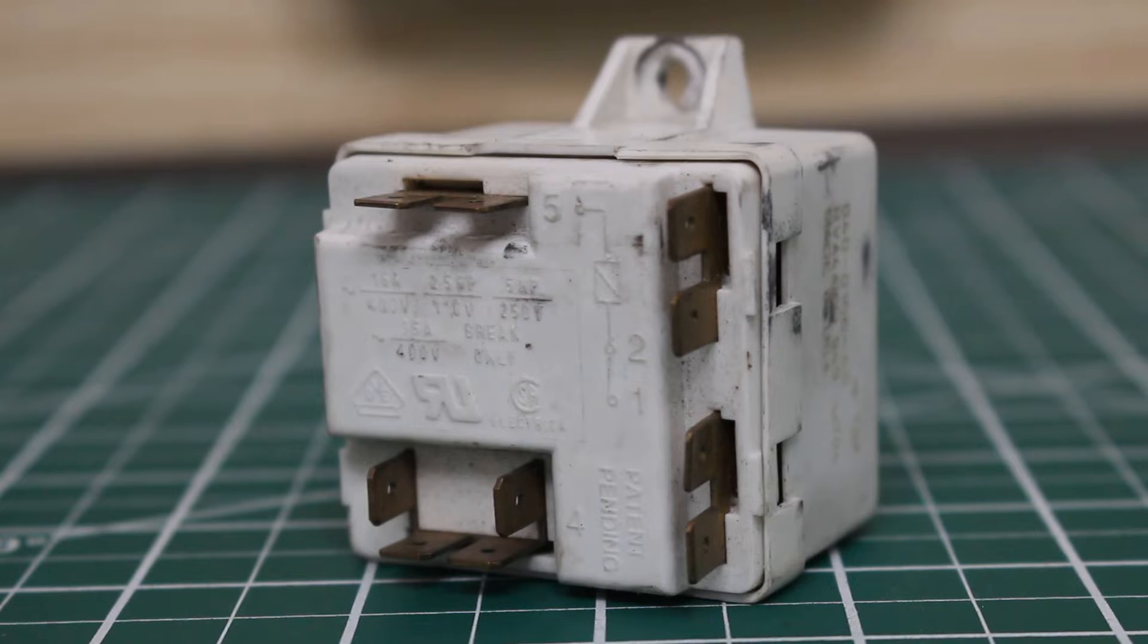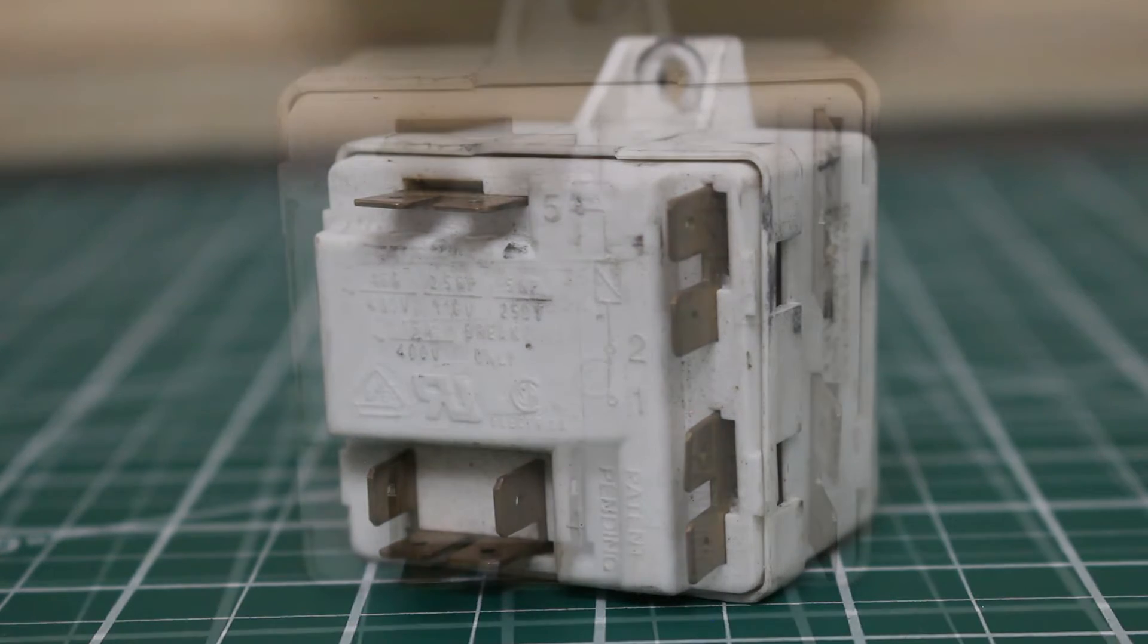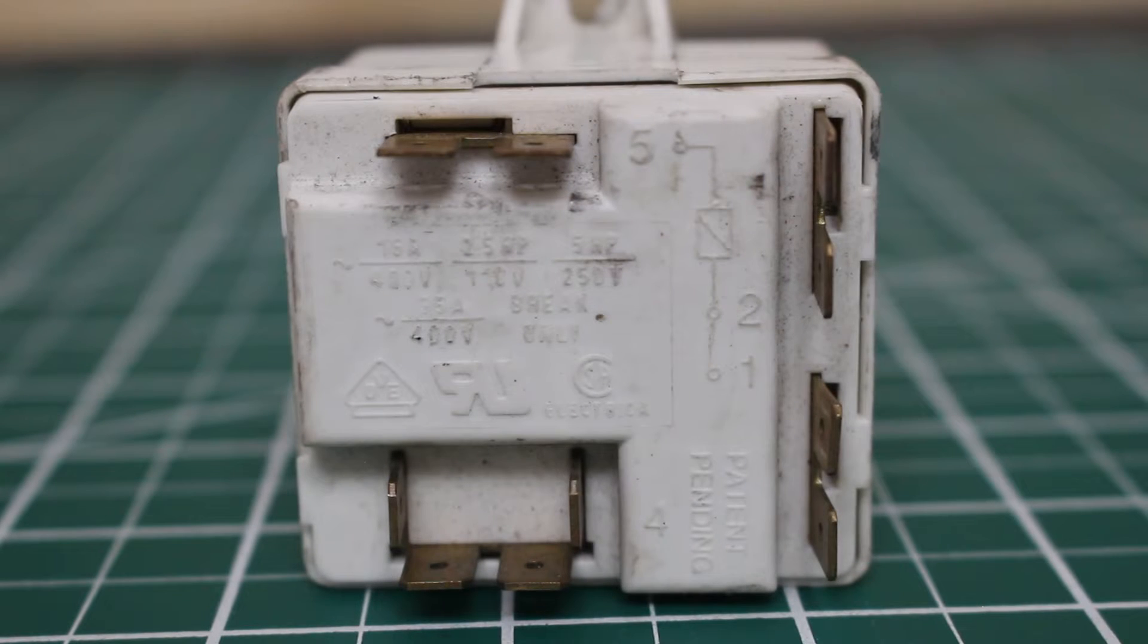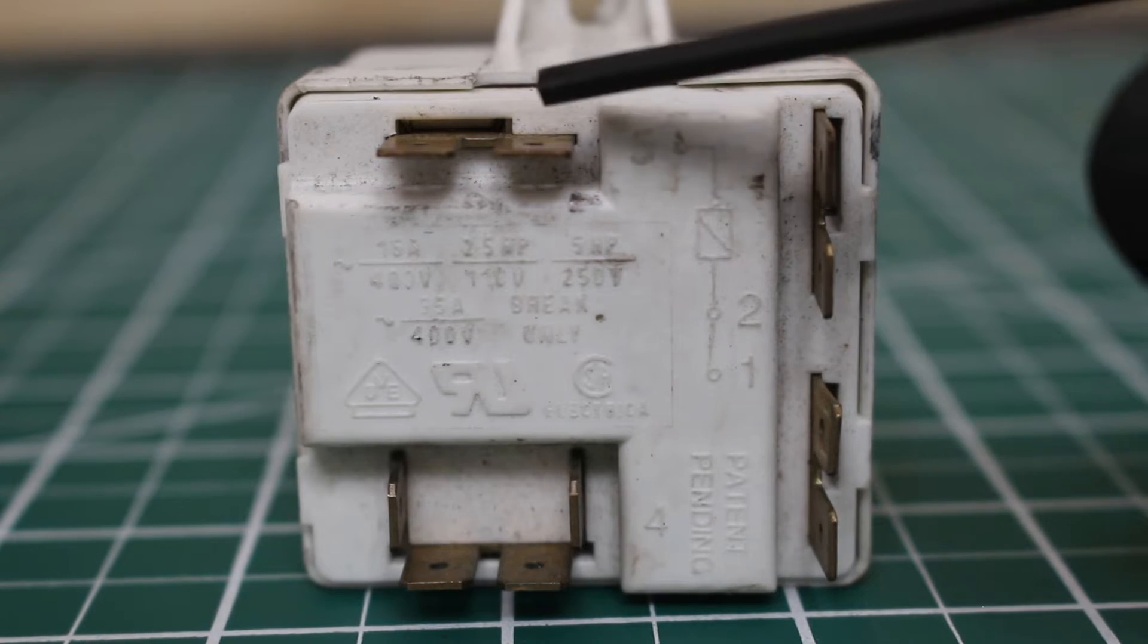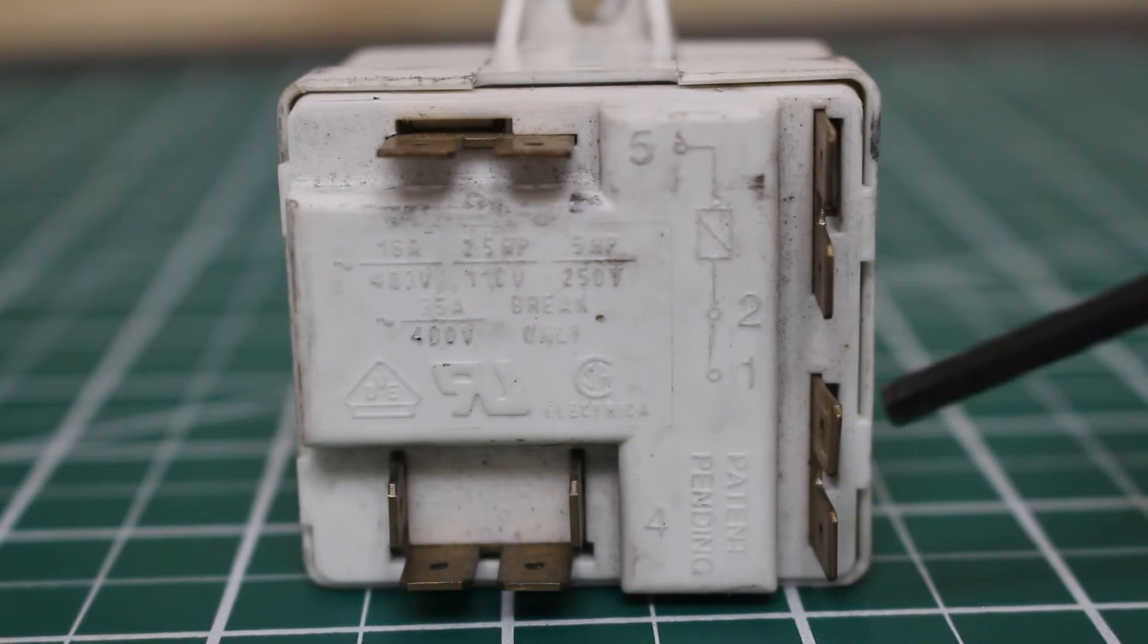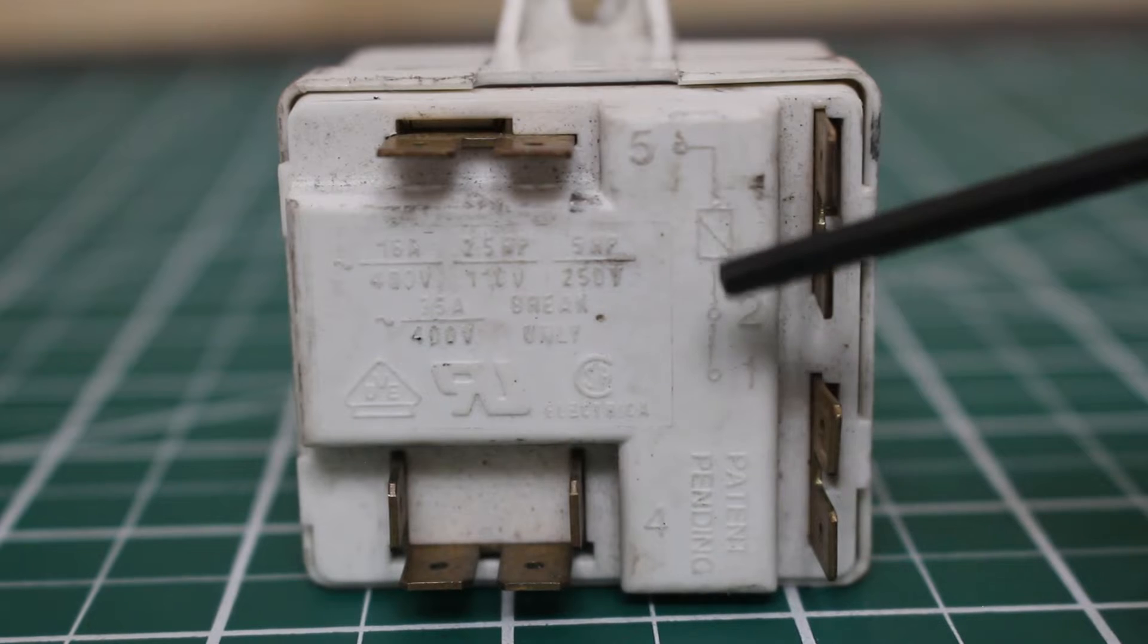Knowing the sequence of operation for this type of starting relay can help you diagnose, confirm, or rule out certain service problems. A potential relay has a nickname in the field as a 5-2-1 relay. Here's your 5, here's your 2, here's your 1. 5-2-1.